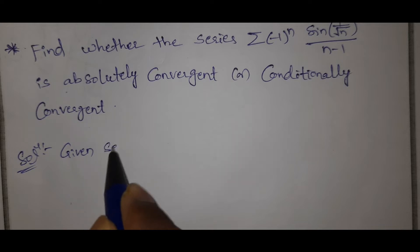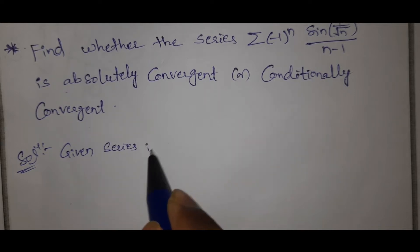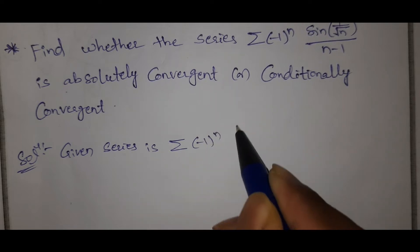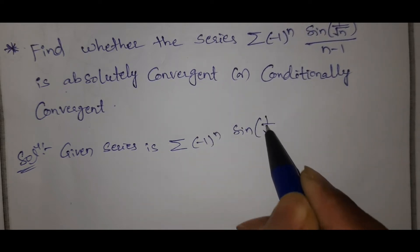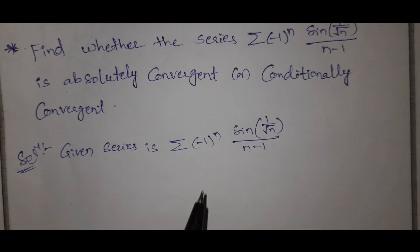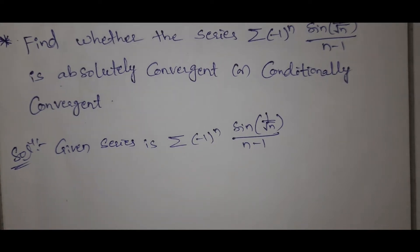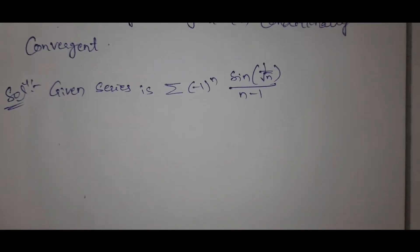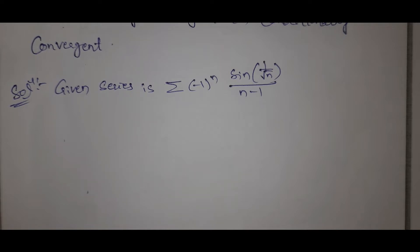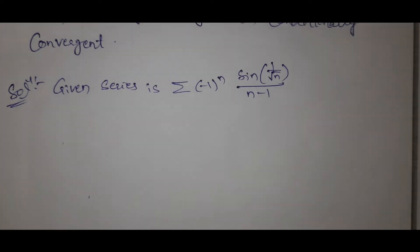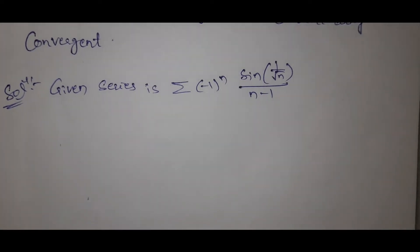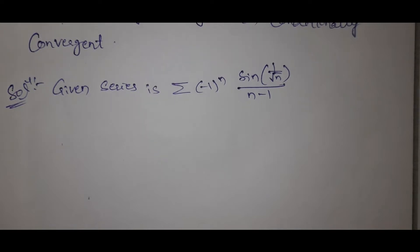Given series is summation (-1)^n · sin(1/√n) / (n-1). You can see this is an alternating series. The question is: what is absolute convergence? The series summation u_n is said to be absolutely convergent if summation |u_n| is convergent.